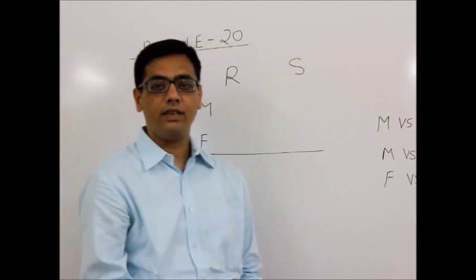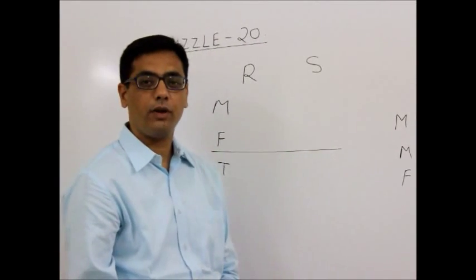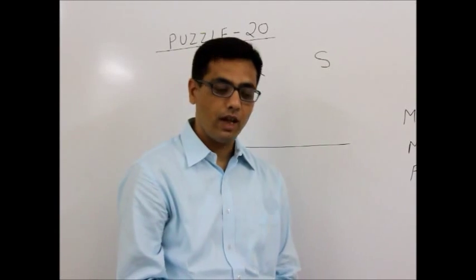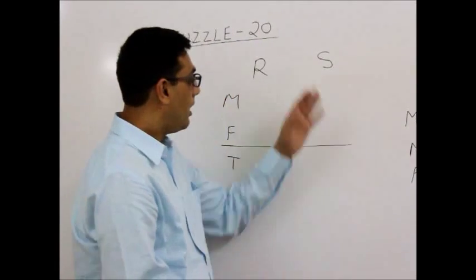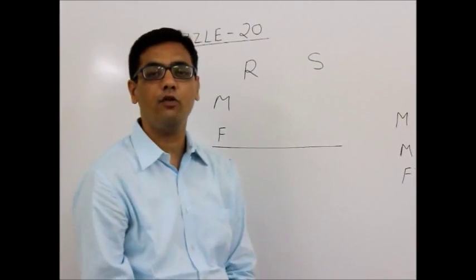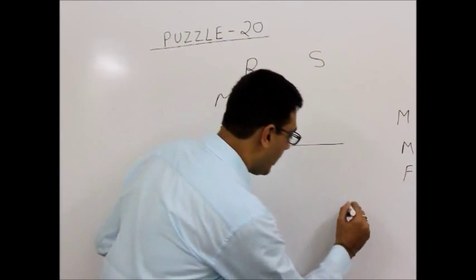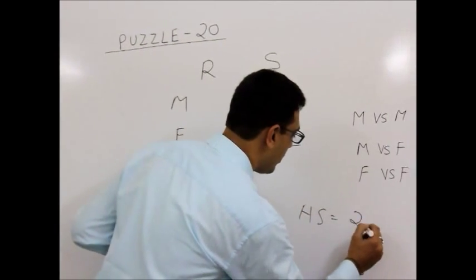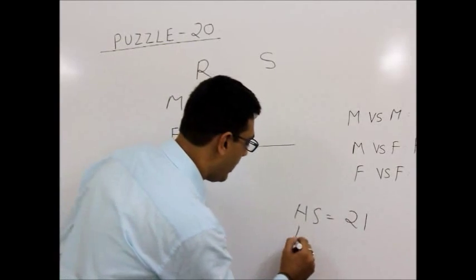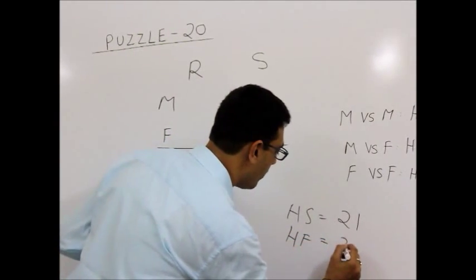Now what happens is somebody, because the person was waiting for the train, so he had ample amount of time, so he calculated how many handshakes and how many hand-folds were there. So that guy reported that total handshakes was 21 and total hand-folds was 34.